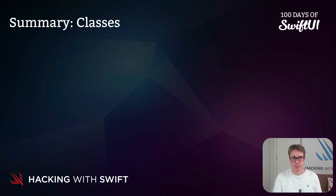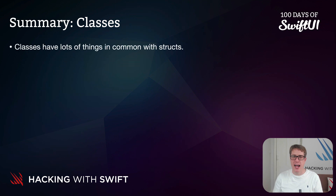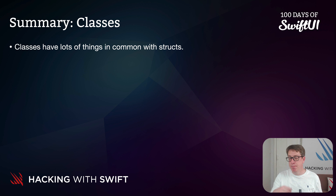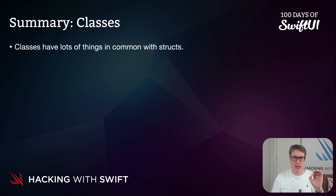First up, structs and classes have lots of things in common, including properties, methods, and more. But there are five key differences between classes and structs, and it's important you understand them all.